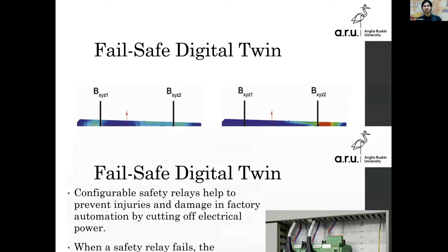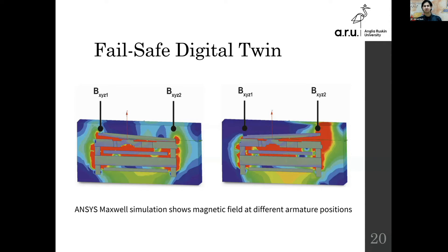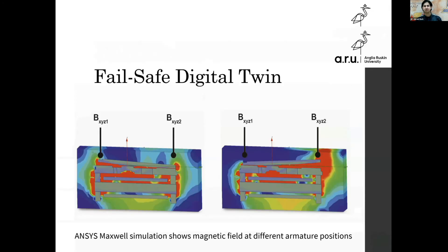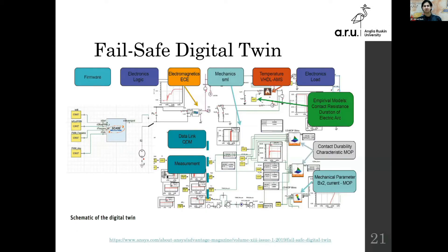ANSYS ran a Maxwell simulation to show the magnetic field at different armature positions, allowing them to gauge after how many cycles the relay would tend to fail. Based on that data, they created a digital twin so that in real time they can monitor all aspects coming into the system and know exactly when something can go wrong. If failure is approaching, the relay can simply be replaced during the next maintenance run or when the production line is not in use.